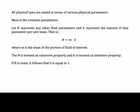All physical laws are stated in terms of various physical parameters, with mass being a common one. Let N represent any fluid parameter and b represent the amount of that parameter per unit mass, so that N equals m times b, where m is the mass of the fluid of interest. N is termed an extensive property and b an intensive property. If N is mass, then b equals 1.